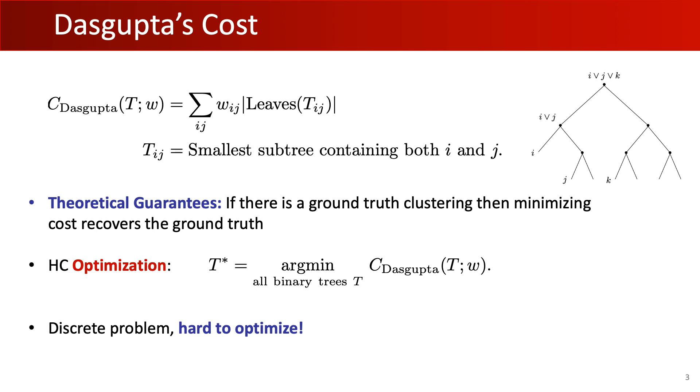Dasgupta's cost has attracted a lot of interest recently because it comes with theoretical guarantees. However, this cost is defined over the discrete search space of binary trees and is NP-hard to optimize. We therefore seek a relaxation of this cost that will be easier to optimize.